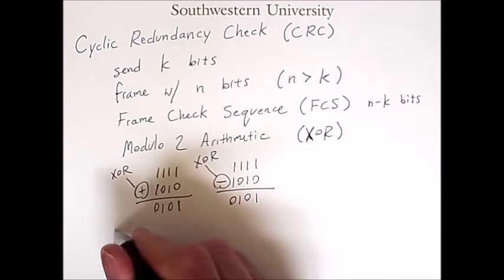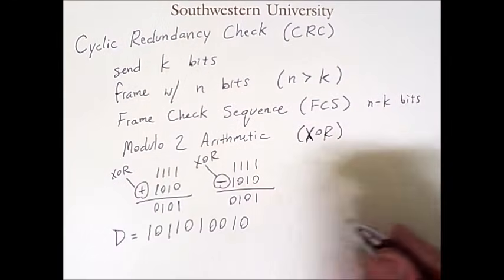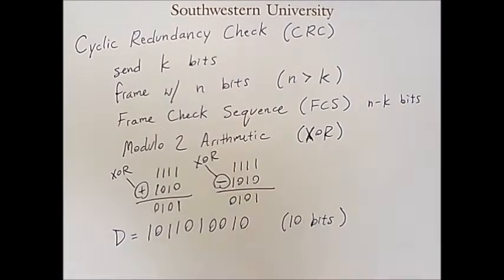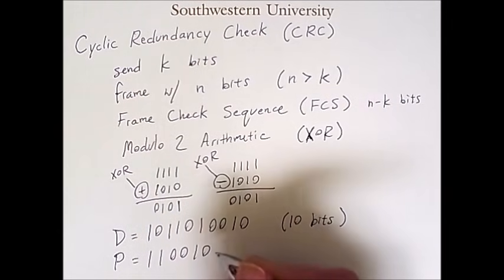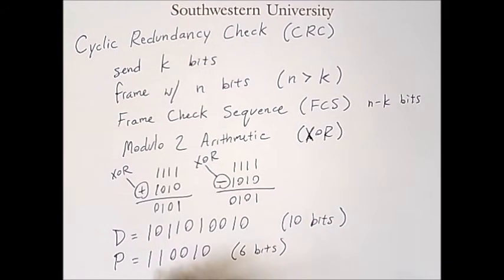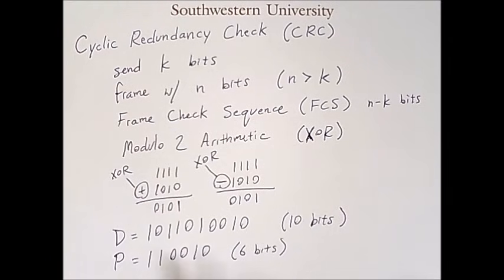The data D that we want to send in this example will be the following sequence of bits. In this example, we happen to have 10 bits we want to send, but real data frames will be much larger. We will also have a predetermined pattern P of a set length. I'm going to choose a particular pattern that happens to be 6 bits long. This pattern is fairly arbitrary, but it's important that all machines communicating using this CRC approach all know what this pattern is. Both the sender and the receiver have to know the pattern for this approach to work.